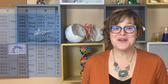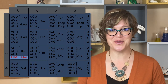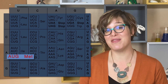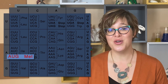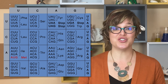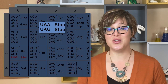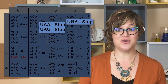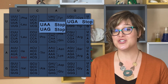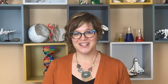Some codons play different roles in translation. For example, the codon AUG encodes the amino acid methionine, which indicates that translation should start. Others, such as UAA, UAG, and UGA, indicate where translation should stop because the polypeptide is complete.